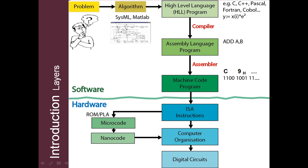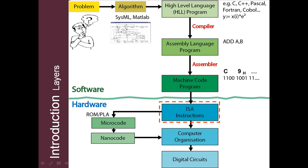This slide attempts to show the main interactions between the various layers of software and hardware in our computer system. The first stage in solving a given problem is to develop a step-by-step solution procedure, or algorithm, as a flowchart perhaps, or in a graphical simulation language such as Stateflow or CISML. To run this on a digital computer, it must be translated into a series of machine code instructions from the computer instruction set, or ISA. The intermediate stages involve converting the simulation program into a human-readable high-level computer language, or HLL, such as C, ADA, or Python. The translation from the HLL to machine code is then done by either a batch compiler or a line-by-line interpreter, according to the particular HLL used.